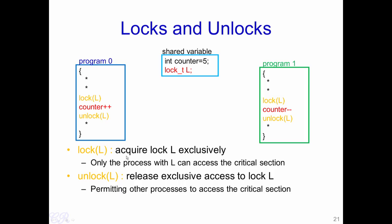Progress means that if program 0 is not in the critical section and program 1 requests the lock, program 1 should be given the lock immediately since no other program is in the critical section. Bounded wait addresses the scenario where program 0 is in the critical section while program 1 has requested the lock — there is a limit on how long program 1 must wait before gaining access. The solution ensures program 0 unlocks L, and only then does program 1 enter, bounding the wait time.